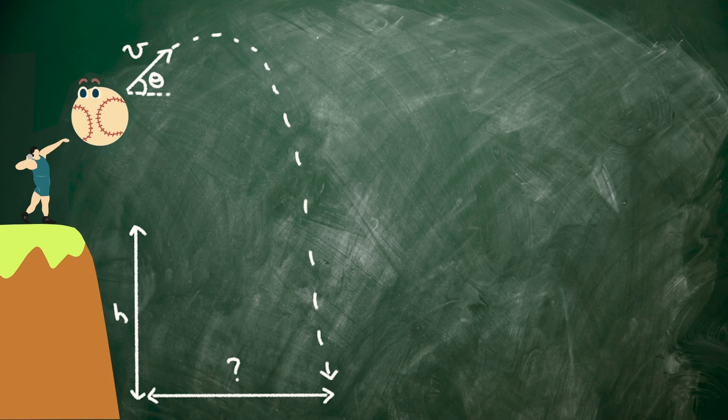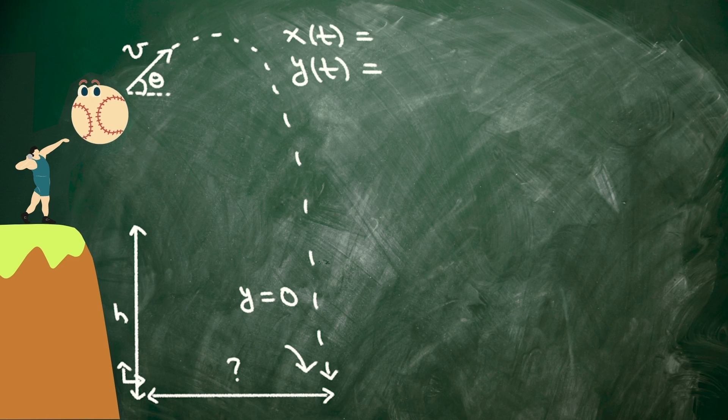How are we going to figure this out? Well, one strategy is to write down the trajectory, x of t and y of t. Then, if we figure out where y is equal to 0 - I've put my origin at the base of the cliff here - if we evaluate x at the moment that y equals 0, we'll figure out where the ball hits the ground. So, what is the trajectory?